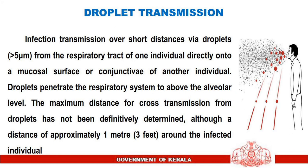Droplet Transmission-Based Precautions: infection transmission over short distances via droplets greater than 5 micrometers from the respiratory tract of one individual directly onto a mucosal surface or conjunctiva of another individual. Droplets penetrate the respiratory system to above the alveolar level. The maximum distance for cross-transmission from droplets has not been definitively determined, although a distance of approximately 1 meter (3 feet) around the infected individual is used.